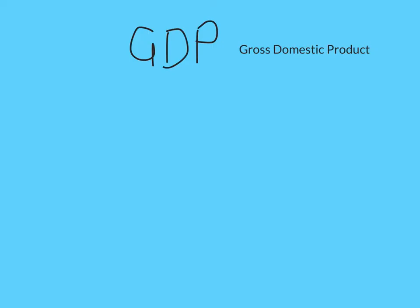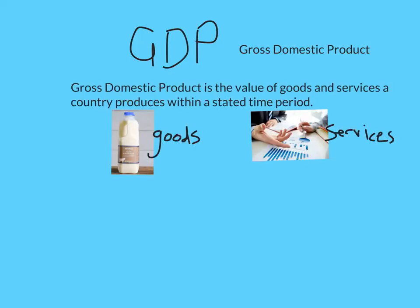In England, we might produce milk — that's a good. We're also particularly good at producing financial services in London, and that would be a service that would help us have a larger Gross Domestic Product. Often this might be quarterly, which means four times a year. We can look at the general pattern across many quarters, and looking at this pattern is how we define whether or not a country is in recession.